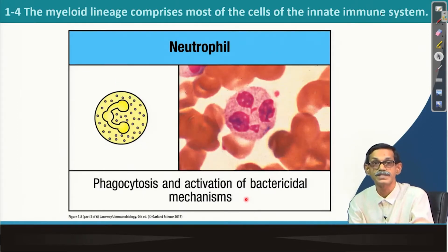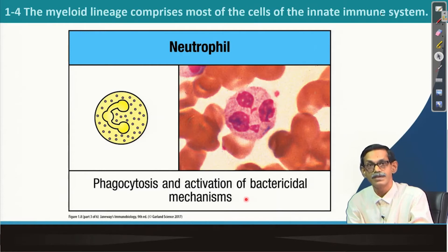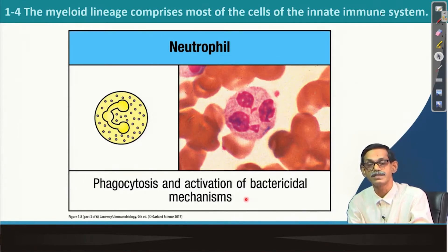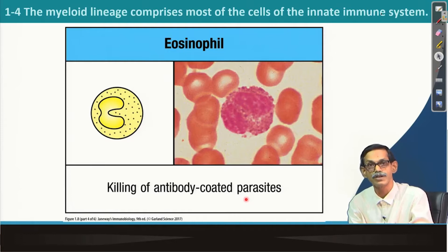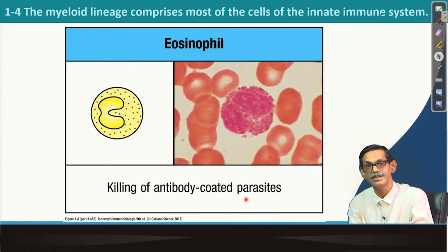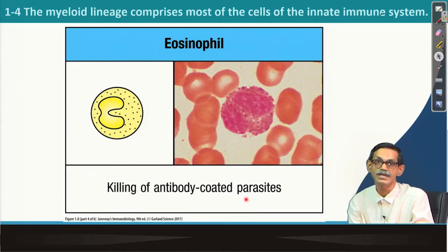Neutrophils are again phagocytic cells. They can eat bacteria and are very effective killers. Activation of bactericidal activity is mostly initiated by neutrophils at the site of infection in the tissue. Eosinophils are also present in blood and are responsible for killing parasites — specifically parasites that are already coated by antibody. After infection, antibody is generated, which coats the parasite, and then the parasite is killed by the eosinophil.